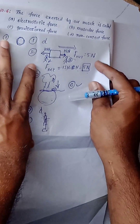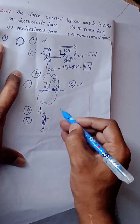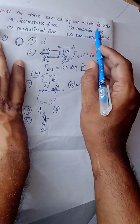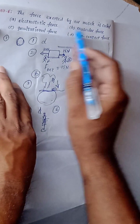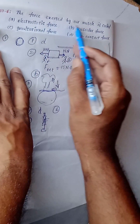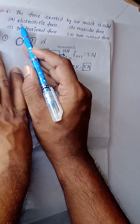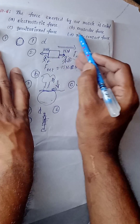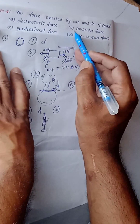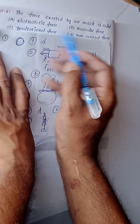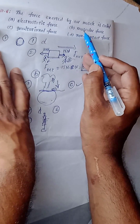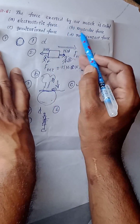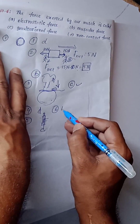Now see question number 6: The force exerted by our muscles is called — obviously muscular force is correct. Gravitational force is not correct, non-contact force is not correct. Muscular force is a contact force. So option B is the correct answer.